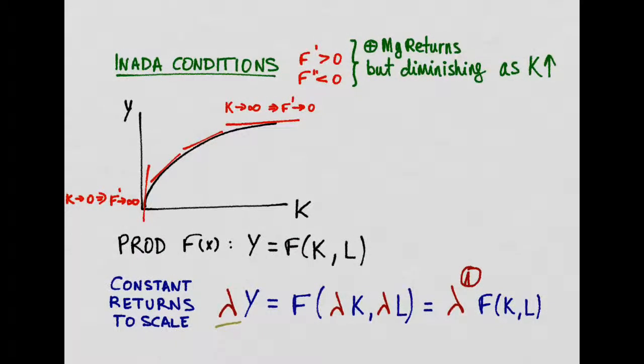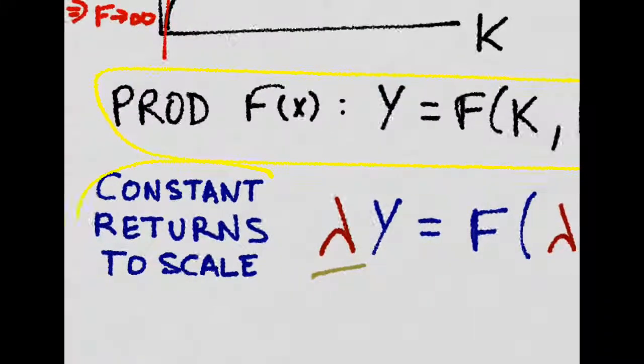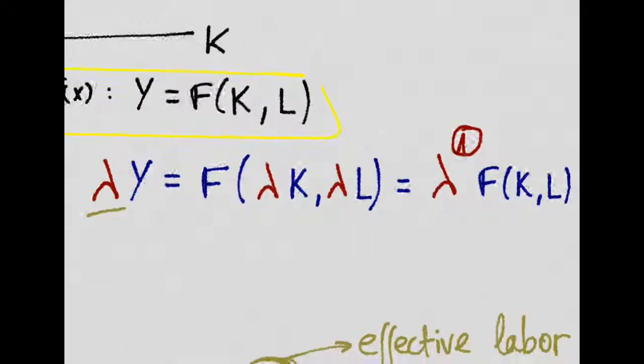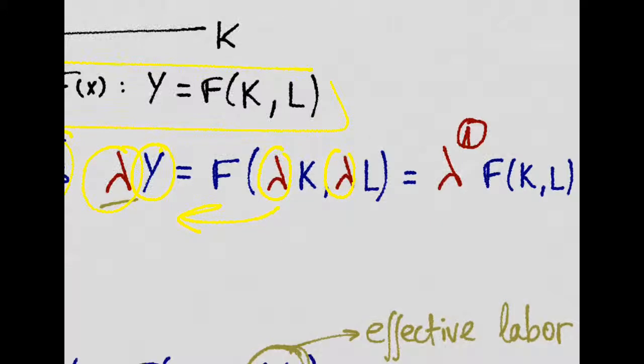Let's start by defining the production function that we are going to use. It exhibits some nice features like constant returns to scale, which basically means that if we multiply its input by some factor lambda, we'll just get that same production function times lambda. In plain words, if we double the two inputs, we'll just double the output. That's what constant returns to scale means.